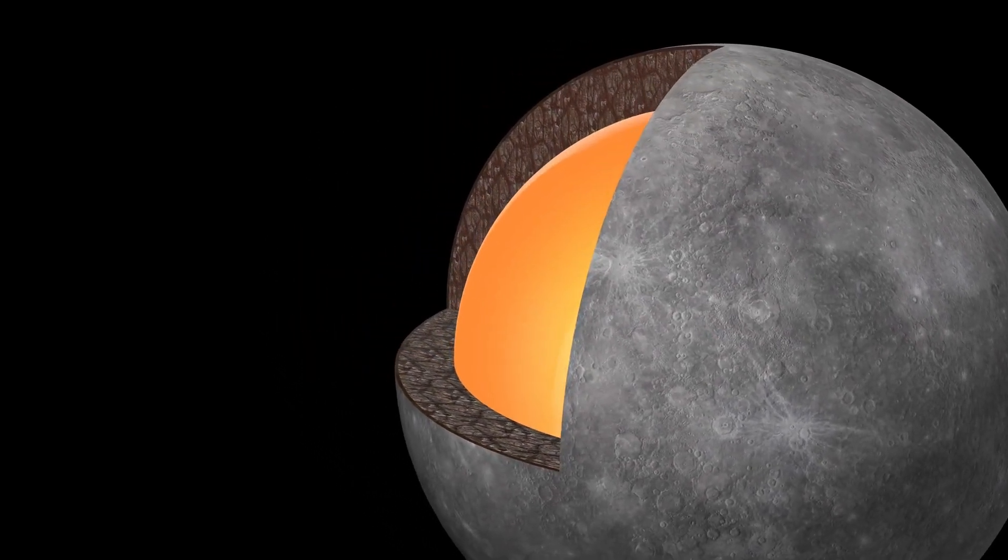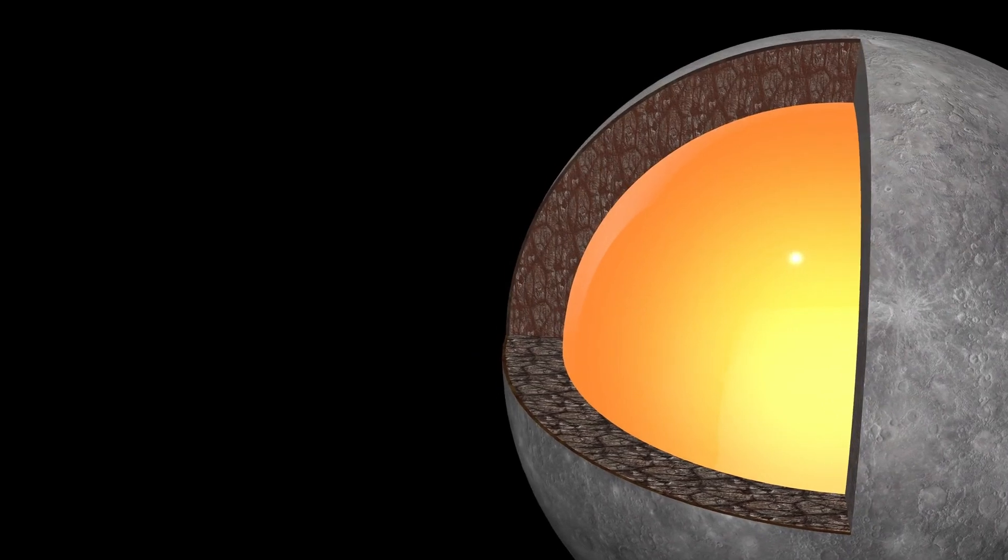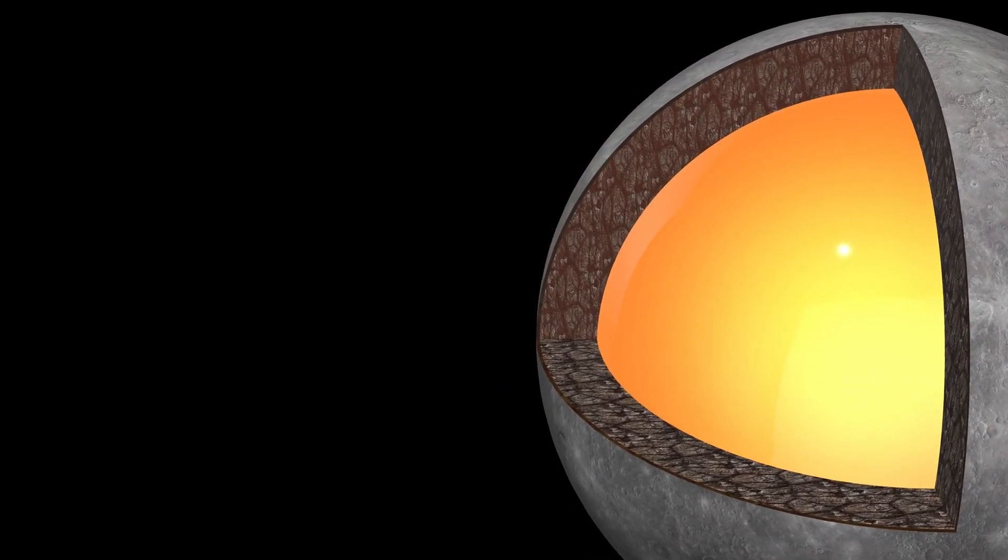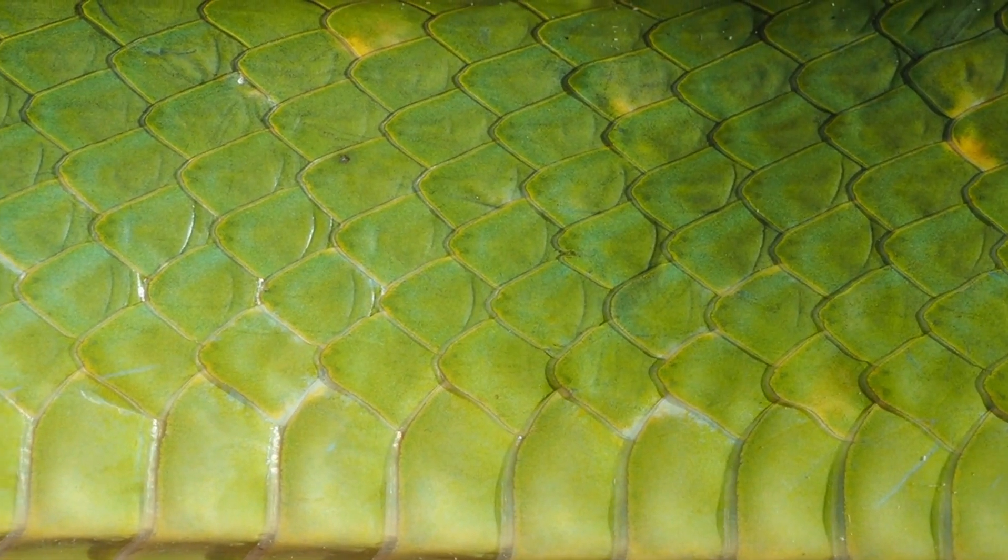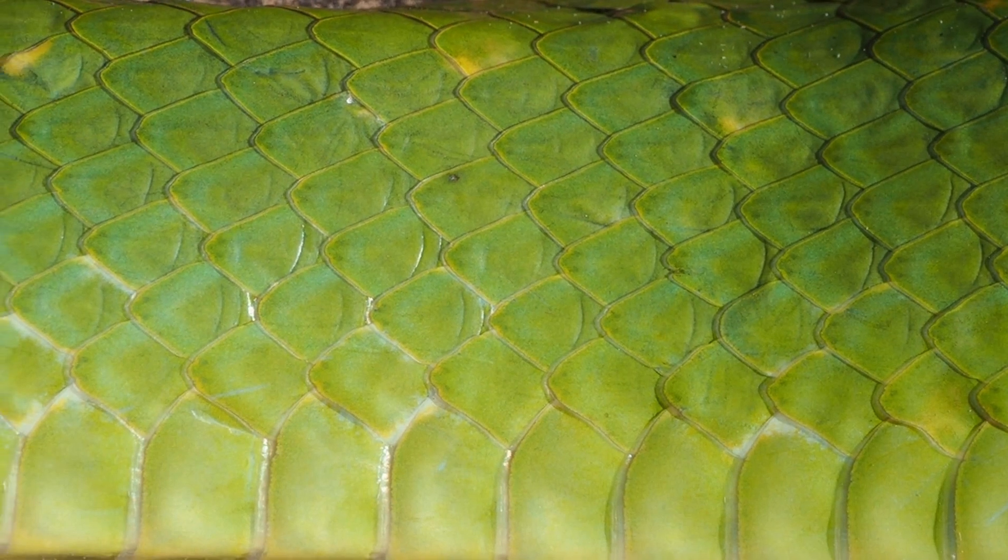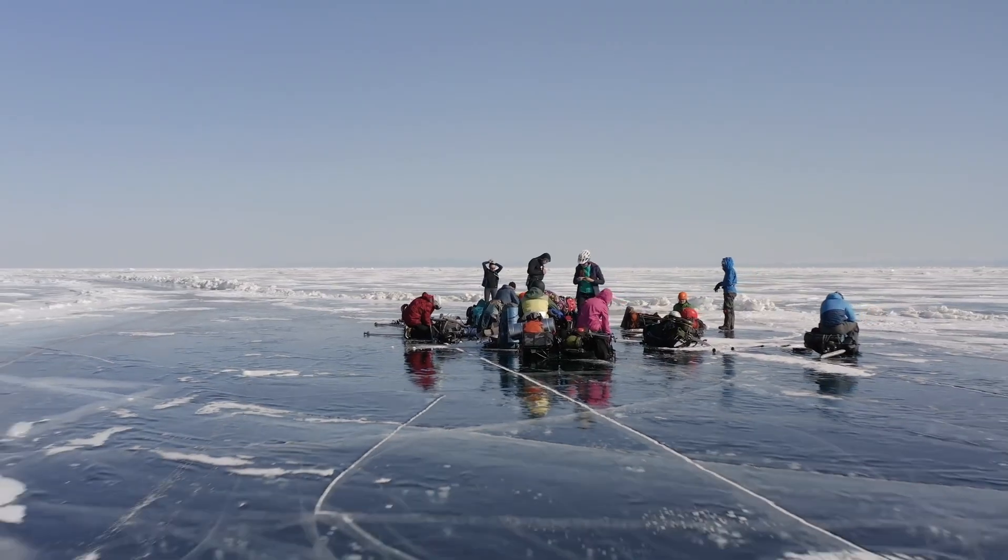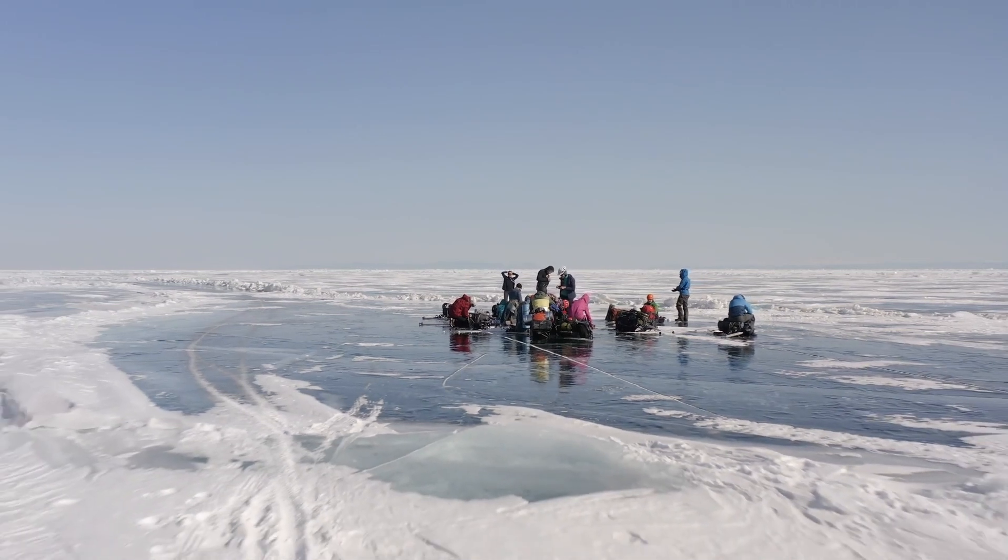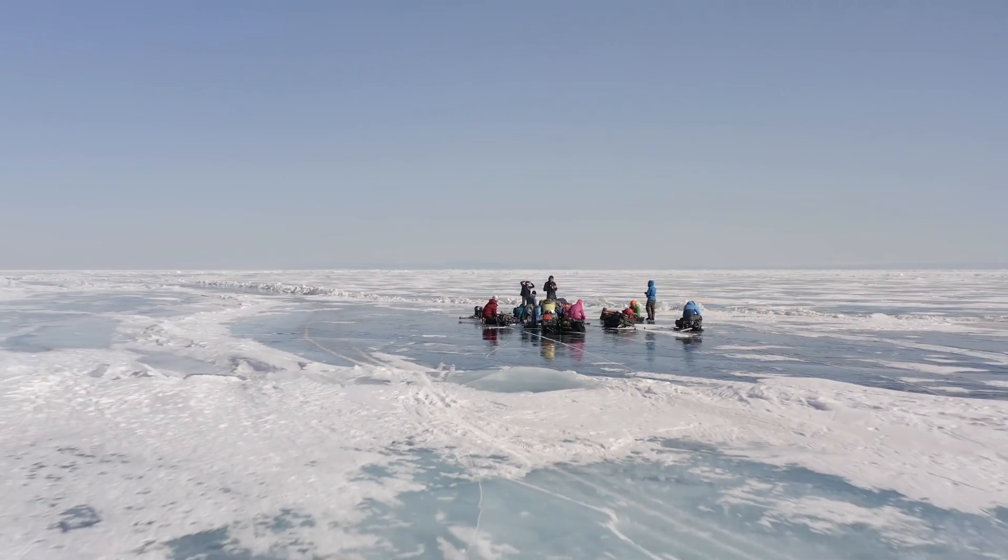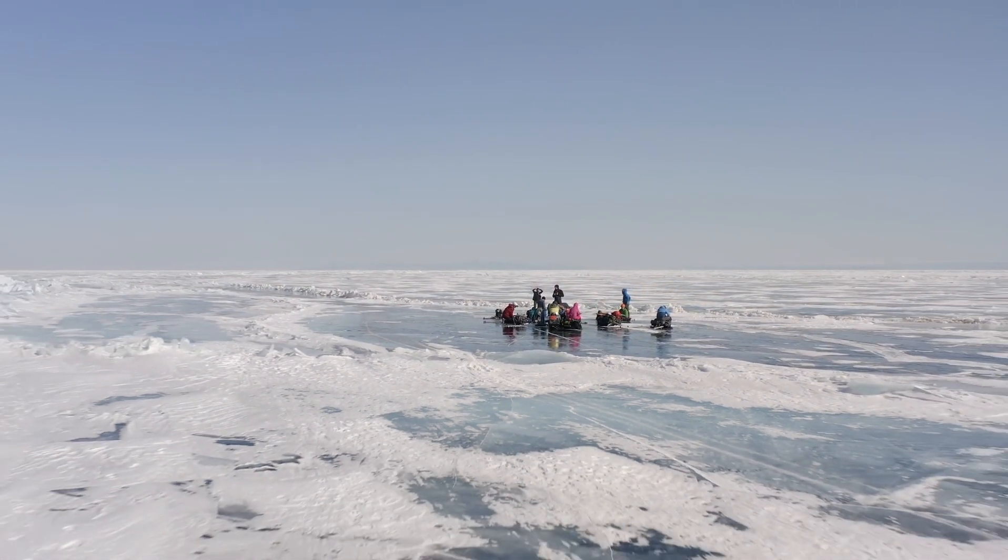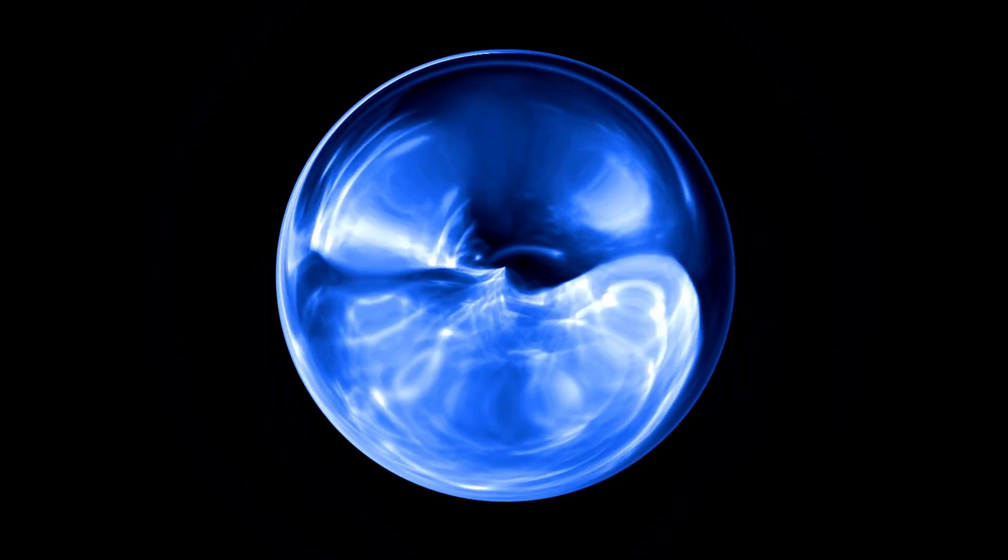As we journey farther into the solar system, we arrive at Neptune, the outermost planet and a realm of extremes. Like Uranus, Neptune is classified as an ice giant with an atmosphere composed of hydrogen, helium, and methane. However, its deep blue hue is more vibrant than Uranus's, possibly due to unknown atmospheric components.